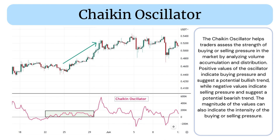Positive values of the oscillator indicate buying pressure and suggest a potential bullish trend, while negative values indicate selling pressure and suggest a potential bearish trend. The magnitude of the values can also indicate the intensity of the buying or selling pressure.